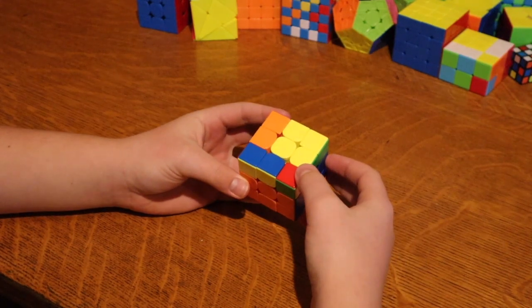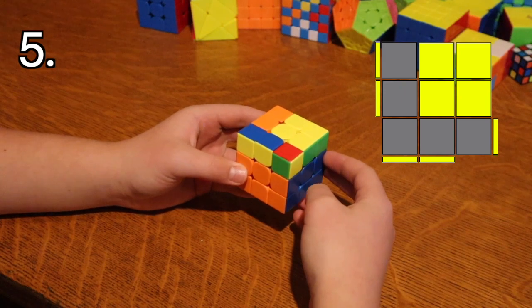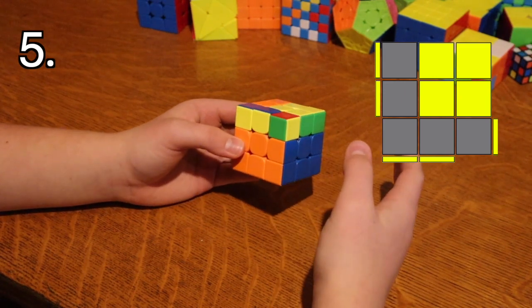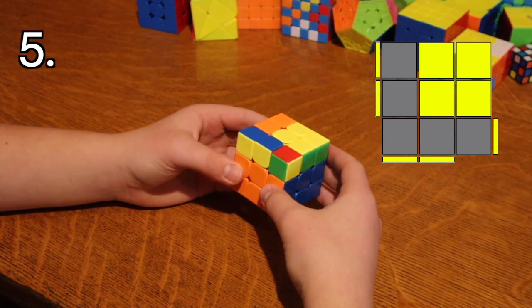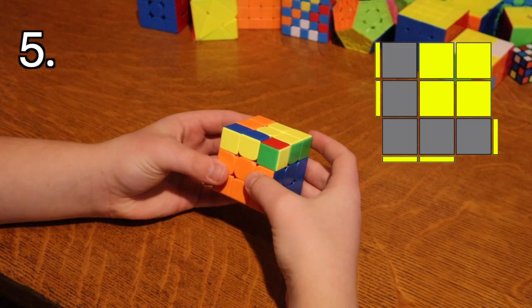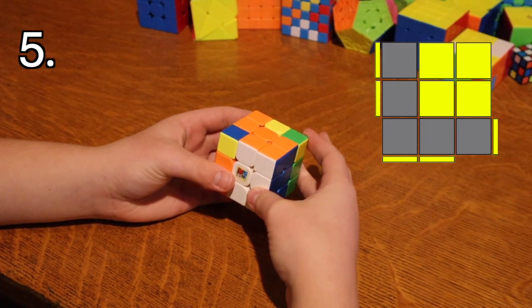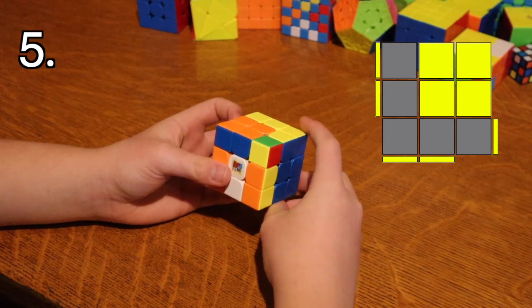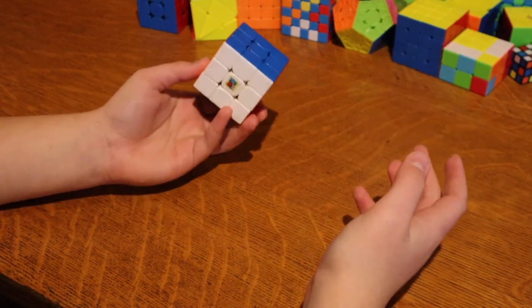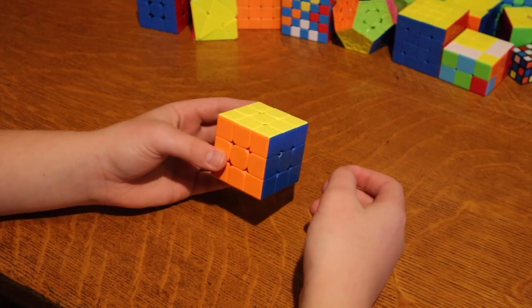And this one is actually the same way. So it looks like this. And if you hold it with this chunk up in the top right, you can do a variation of the anti-sune algorithm. So basically the first move instead of being a normal R is an R wide like this. And then you do the normal algorithm. And then the last R is an R wide prime. So it's just the first and last moves are wide instead of normal.